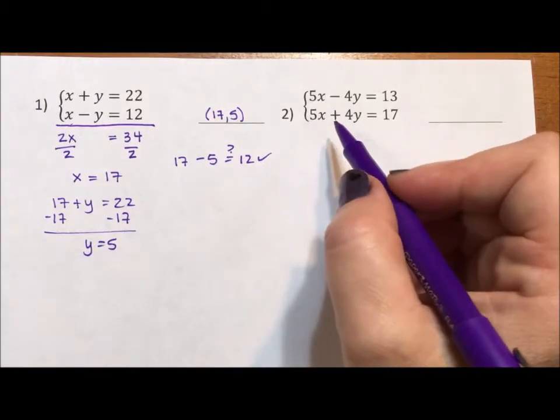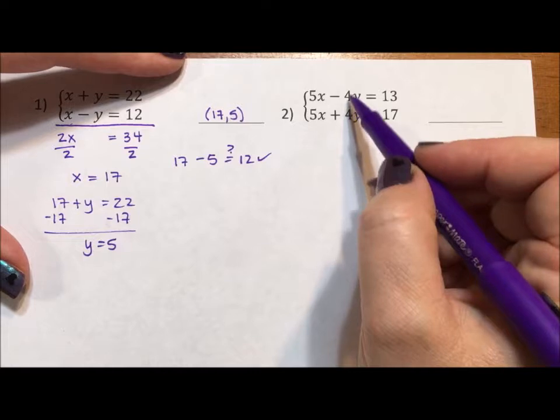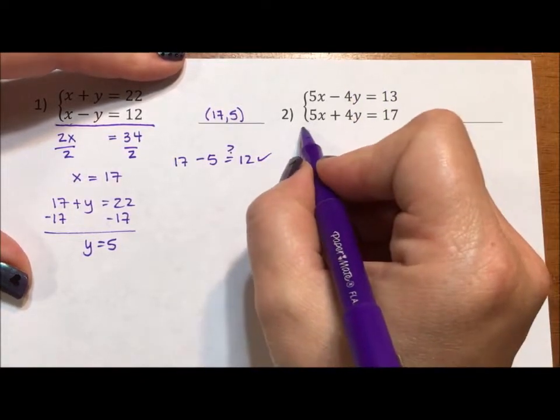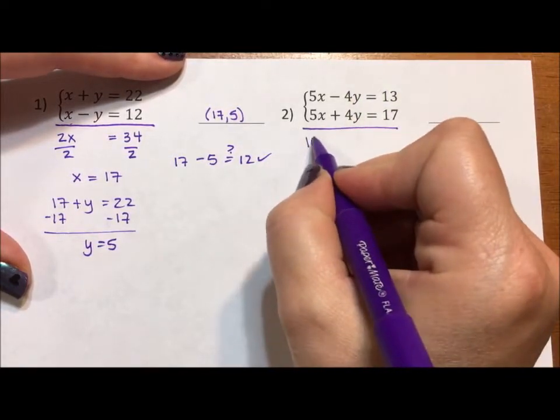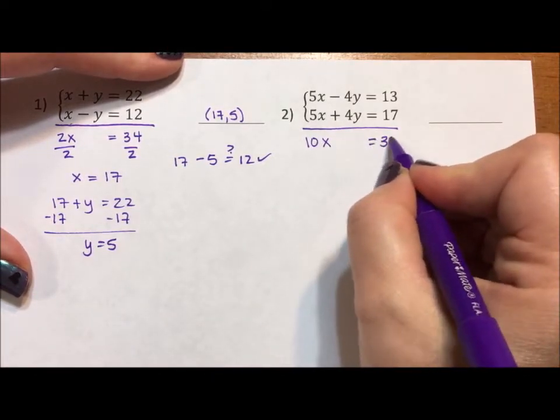If you notice, again, we have this nicely set up—equal coefficients, opposite in sign. We can add down again. We get 10x, the y's cancel, the y's eliminate, equals 30.